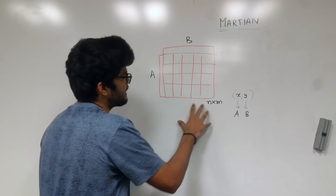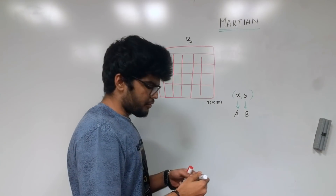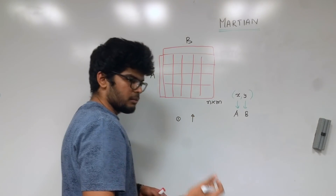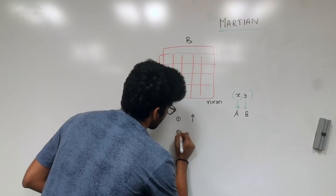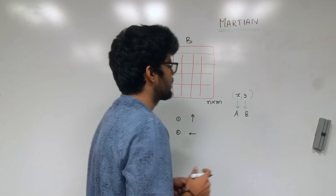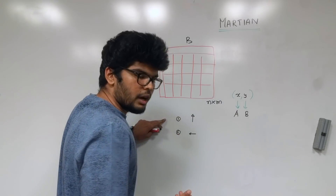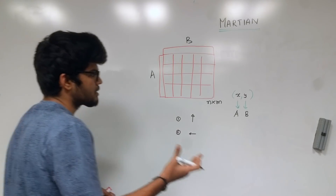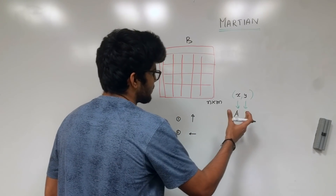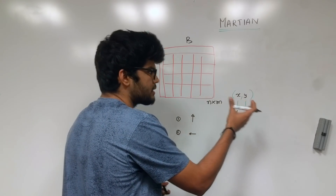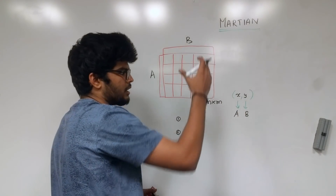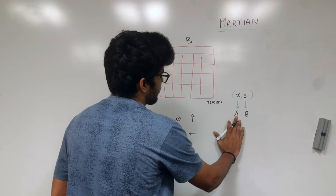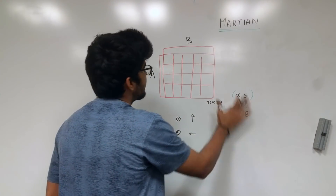In each cell we can have two different types of conveyor belts. The first one goes from bottom to top and the second one goes from right to left. Each cell can have only one of these two different types of conveyor belts. Our task is basically to take the minerals from each of the cells to the respective mines — mineral A to its mine and mineral B to its mine.